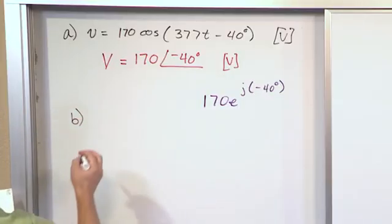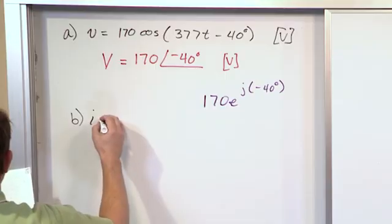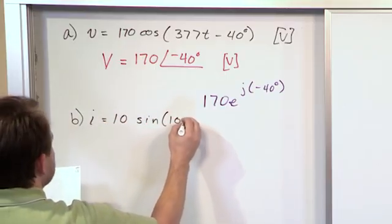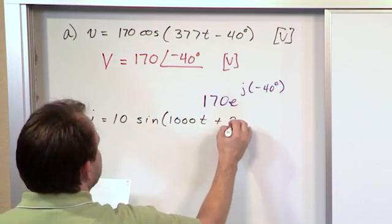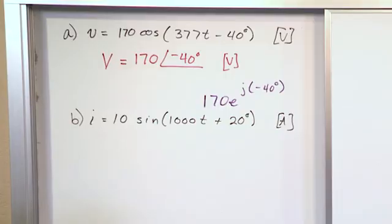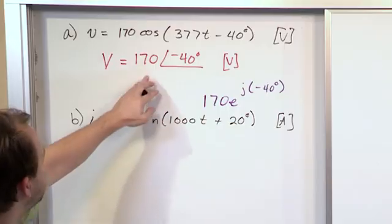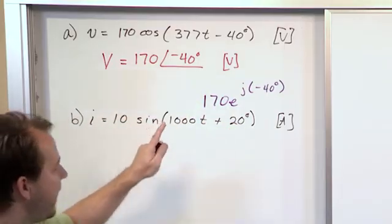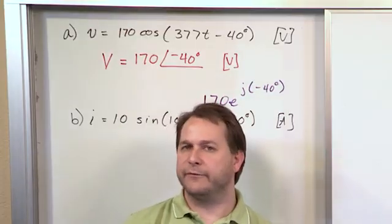What if I wanted to say I had a current running around the circuit, and it was 10 times the sine of 1000t plus 20 degrees, and that's amps, and I asked you write that as a phasor notation. Well, you would think it would be 10 at an angle of 20 degrees, but notice this is a sine.